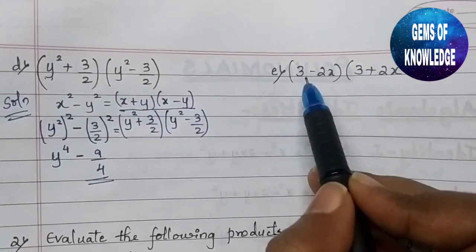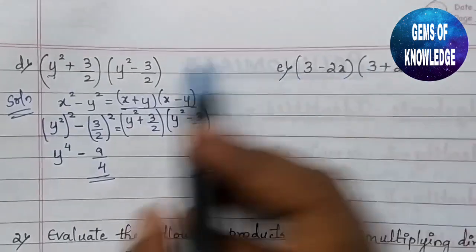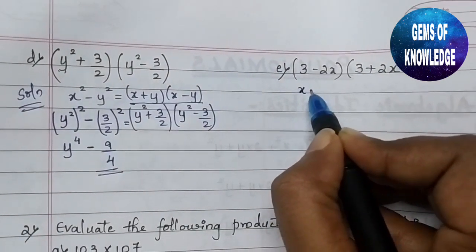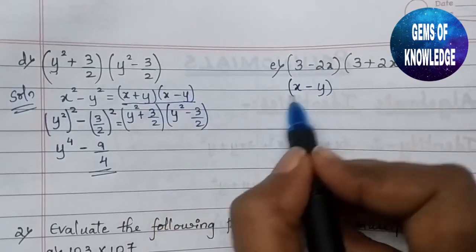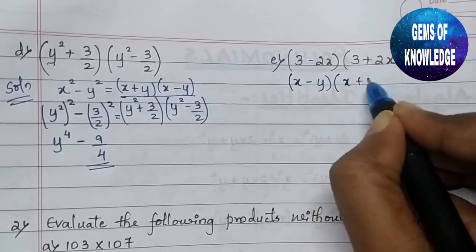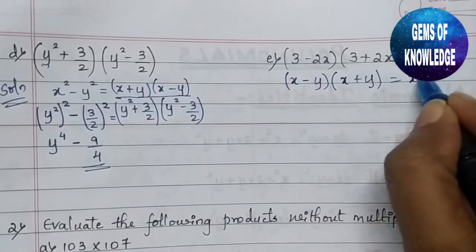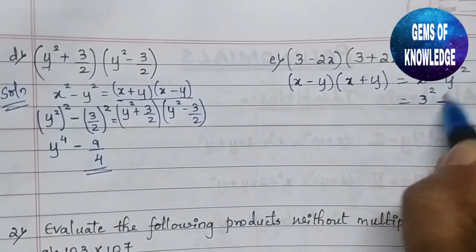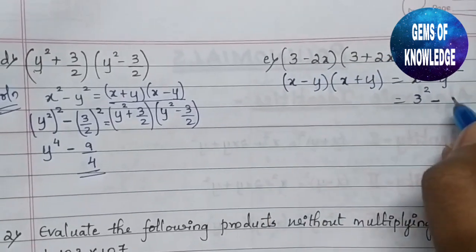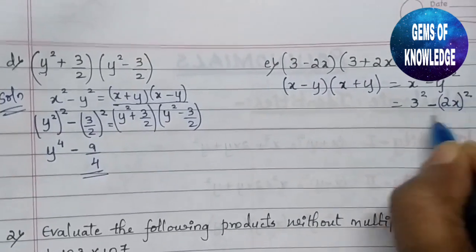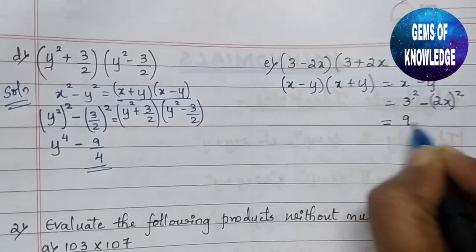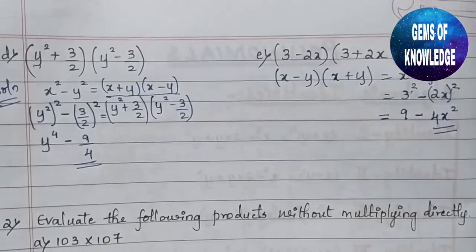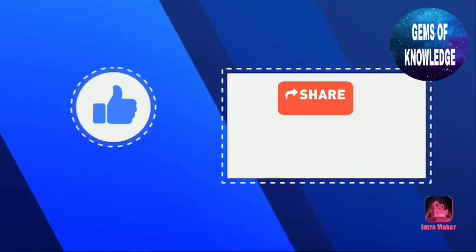The next question is (3 - 2x)(3 + 2x), which is similar to the identity (x - y)(x + y) = x² - y². Here x = 3 and y = 2x. So the answer is 3² - (2x)² = 9 - 4x².